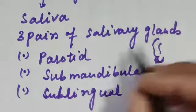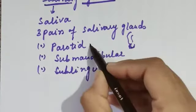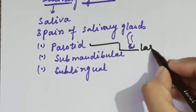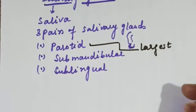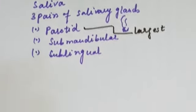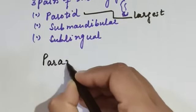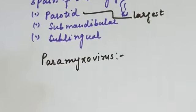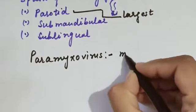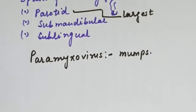The parotid glands are the largest of the salivary glands. They are present in front of and below the ears. Sometimes the parotid gland may be infected with a virus known as paramyxovirus. This causes a painful condition that we call mumps — known as 'ganfed' in Hindi. It causes swelling and pain.